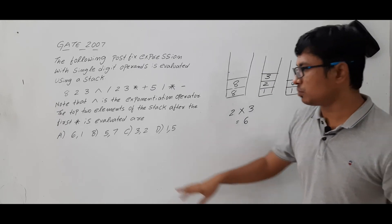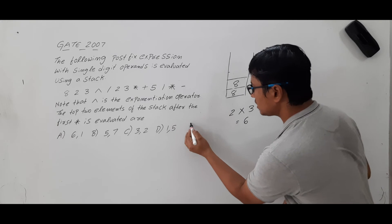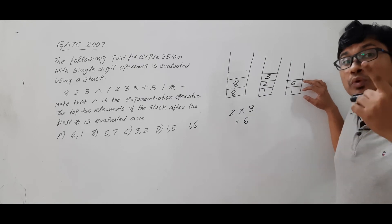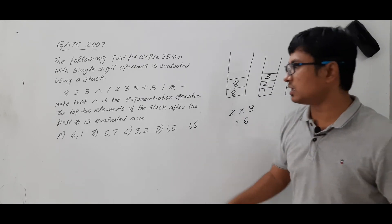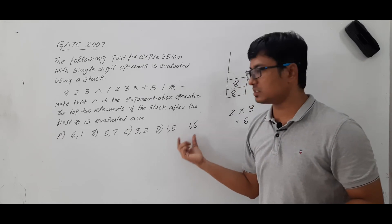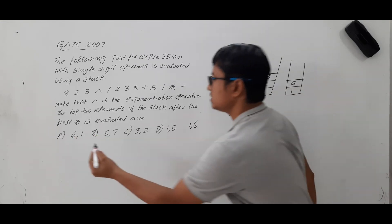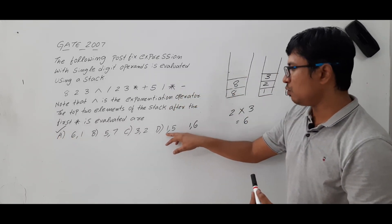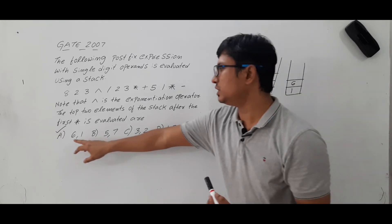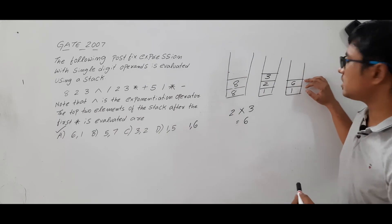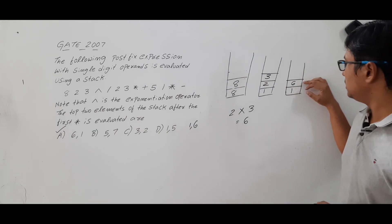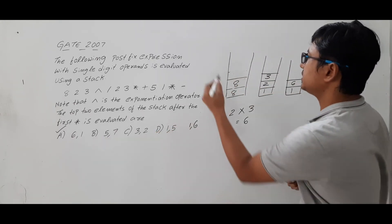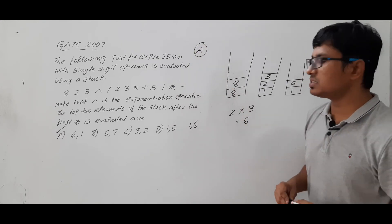The top two elements of the stack after the first multiplication is evaluated are 6 and 1. If there is an option 1,6 and an option 6,1, you need to select 6,1 because the stack is last-in first-out. So 6 is the top first element and 1 is the second element. The right answer for this question is 6, 1.